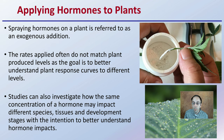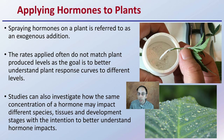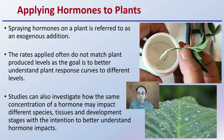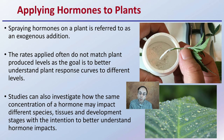When applying hormones to plants externally — for example, adding rooting hormone when cloning or spraying hormones on plants — this is referred to as exogenous addition. The rates applied often do not match the plant-produced levels, as the goal is to better understand plant response curves at different concentrations. Growers might apply hormones at increased levels to help increase the rate of response, but over-adding certain hormones can actually have negative effects. Studies also investigate how the same concentration of a hormone may impact different species, tissues, and development stages. The same hormone applied at different stages of growth could have very different effects, as seen in the graph earlier.